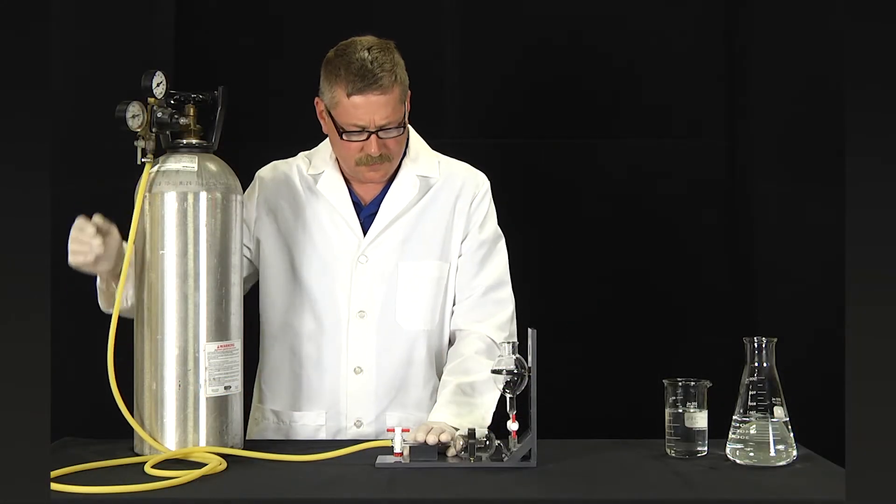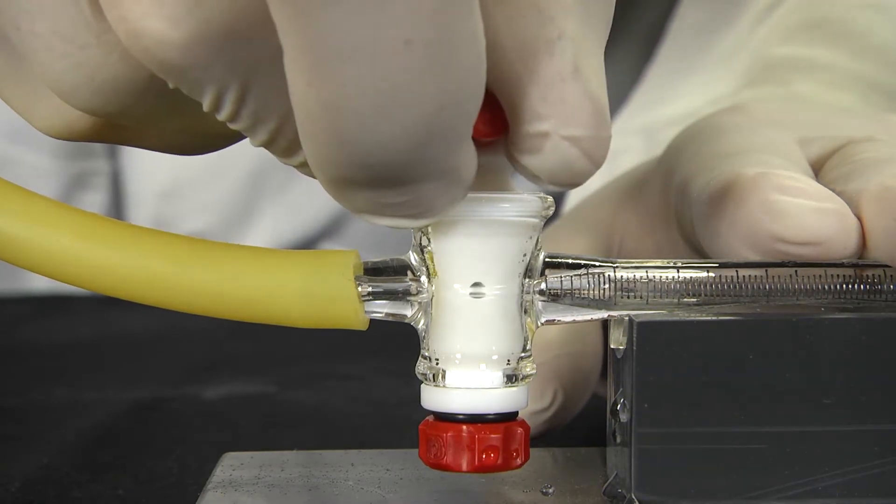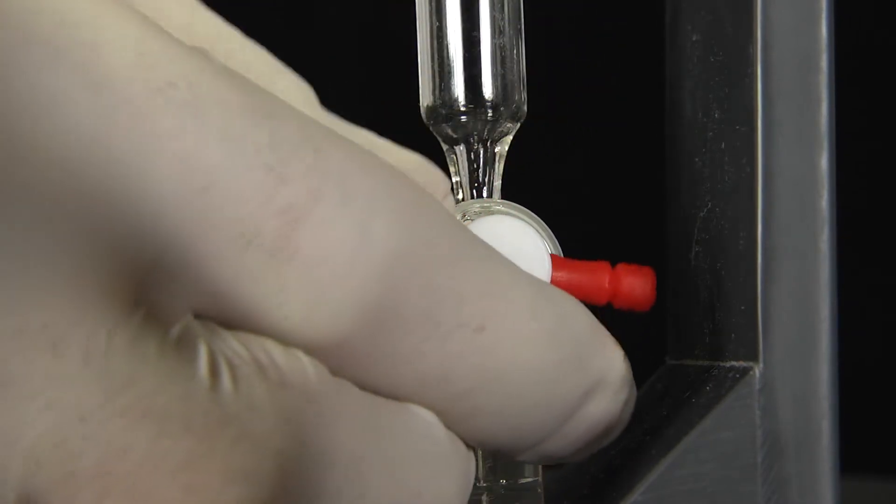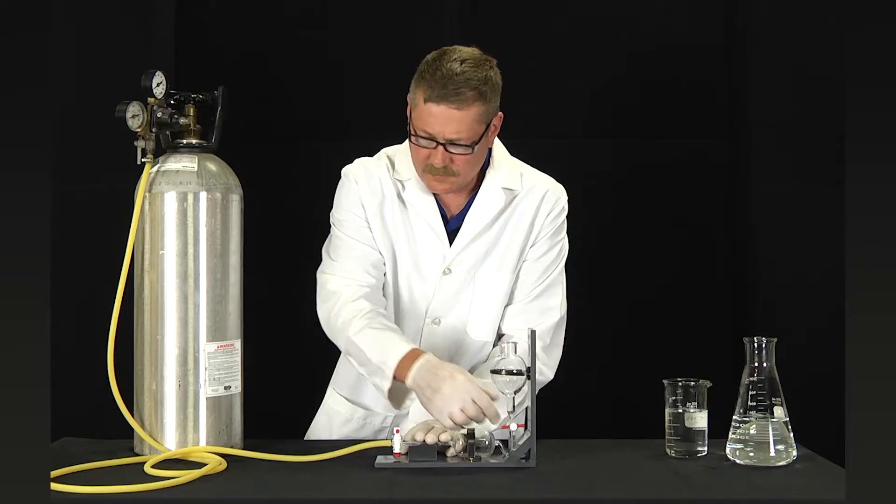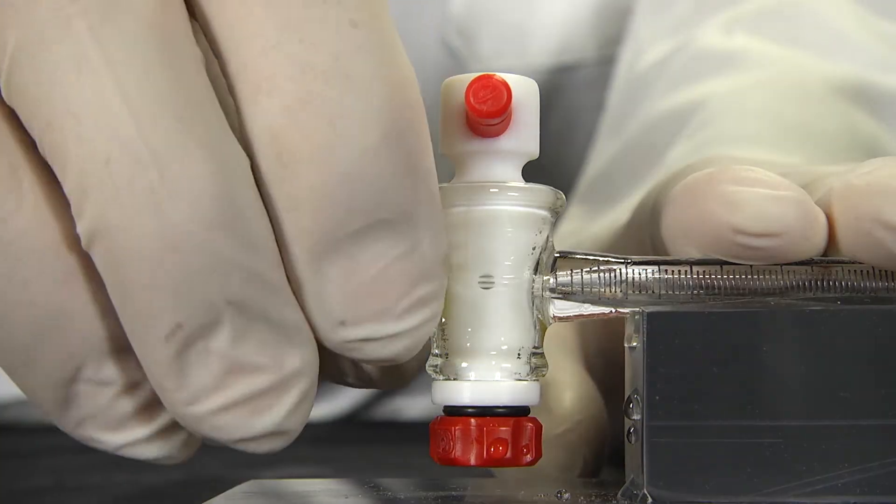After the sample has been taken, close the cock on the absorption burette first. Then close the cock on the caustic reservoir. With both closed, turn off the gas supply. Gently remove the hose.